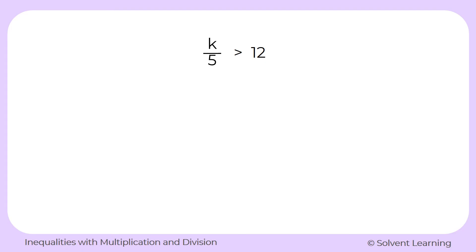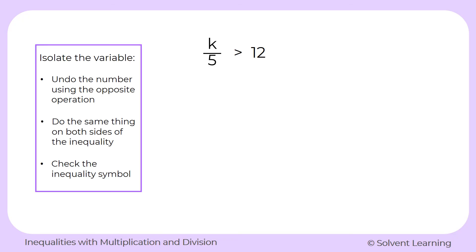For our next example, we have k over 5 is greater than 12. And our steps for solving this inequality will be the same as before. We want to focus on isolating the variable k.